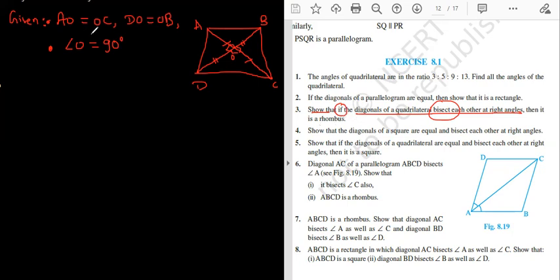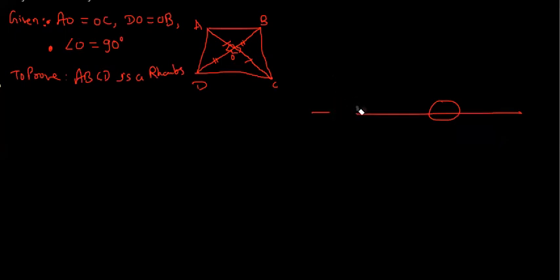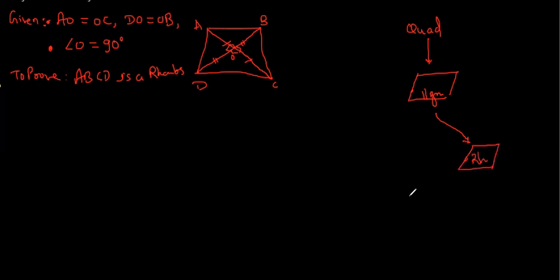Now what do we need to prove that? Prove that it is a rhombus. A, B, C, D is a rhombus. If you remember that flow chart, right now, where are we? We are at quadrilateral. After quadrilateral, most important junction is parallelogram. Okay. After that you reach rhombus.